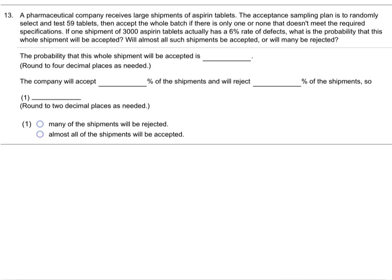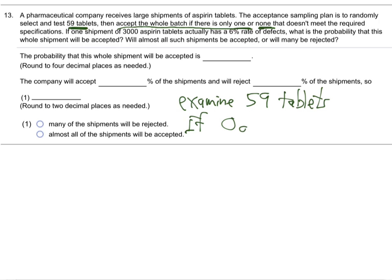Number 13 — a pharmaceutical company has a quality control plan. This is actually one of the really frequent uses of statistics: quality control plans. Their plan is they're going to look at 59 tablets, and if one or none is bad, they accept the whole batch. So they examine 59 tablets, and if zero or one are bad, they accept the whole batch.